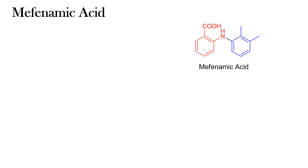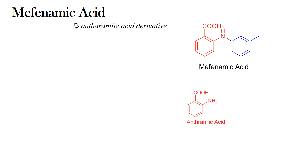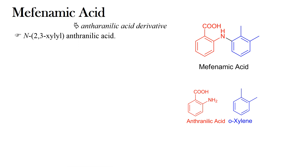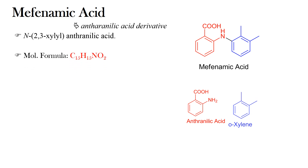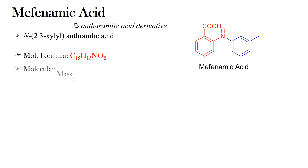Coming to its structure. Structurally, Mephenamic Acid is a derivative of anthranilic acid. The second part of the compound resembles orthoxylene. So Mephenamic Acid is chemically N-2,3-xylyl anthranilic acid. Its molecular formula is C15H15NO2 and its molecular mass is 241.